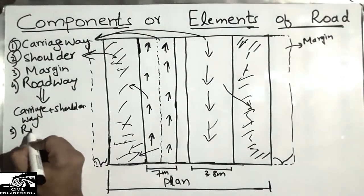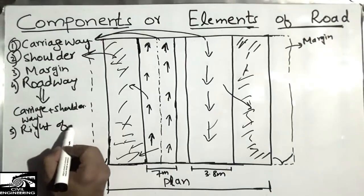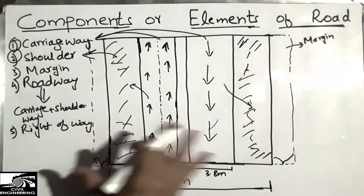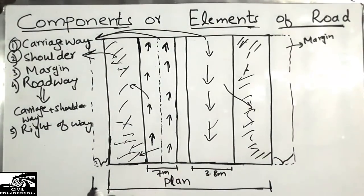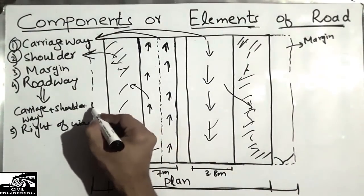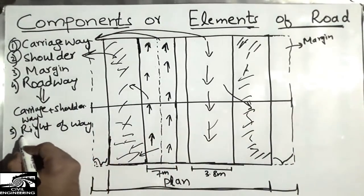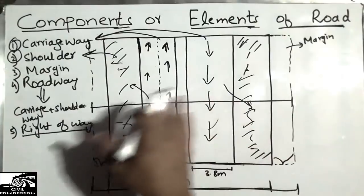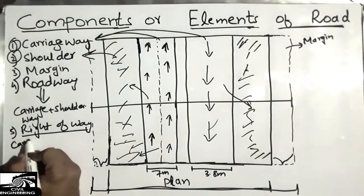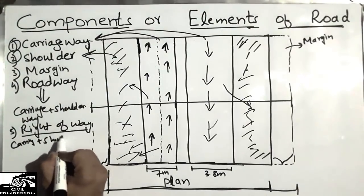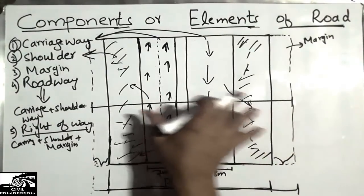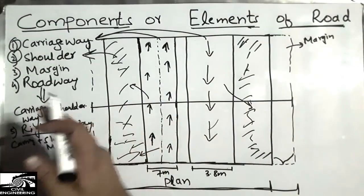The fifth component is the right of way. The right of way is the whole width of the road from one margin to the other margin — the longest distance across the road in the cross-section direction. It is a combination of carriageway, plus shoulder, plus margin. It includes all parts of the road components, and we call this the right of way.